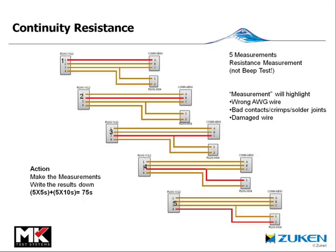The very least that we want to do to test this harness is continuity resistance measurement, short circuit test, and high voltage test. For the continuity resistance measurement on this simple harness, we have 5 measurements to make. Allowing a bare minimum of 5 seconds to make each measurement and 10 seconds to log the results, that is 75 seconds of manual testing. Measurement is key, as it highlights the nature of any failure such as wrong wire gauge, bad crimps, solders, or damaged wires.